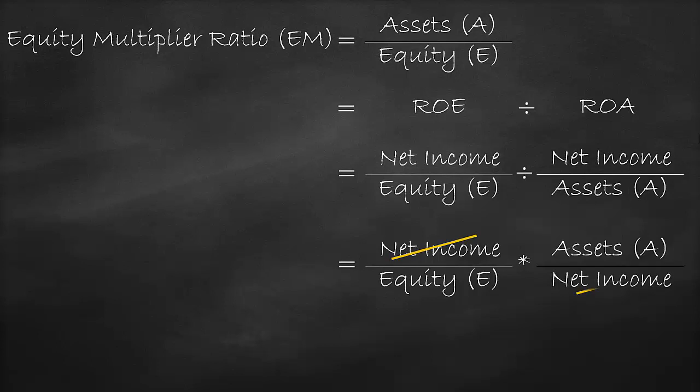Net income will offset net income. So the equity multiplier ratio equals assets divided by equity, which is our value of assets. This is our original formula.